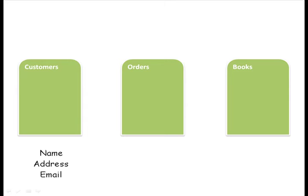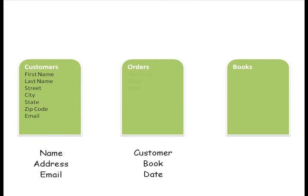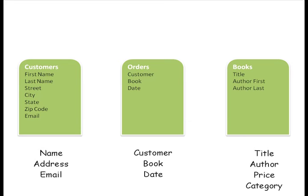In a database, it's easier to break down a few of these fields. So we'll say first name, last name, and for the address, we'll put street, city, state, and zip. The email will remain the same. For my orders table, everything can stay the same for now, so we'll just say customer, book, and date. My books table includes title, author, price, and category. Title will remain the same, but I'll break author into two: author first name and author last name. And I'm going to leave price and category the same.